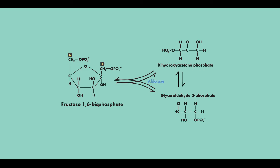These two molecules are isomers of each other. And there is an enzyme that keeps these two molecules in equilibrium, which is called triose phosphate isomerase.